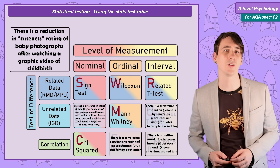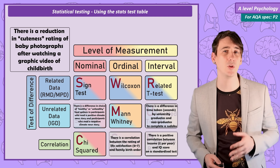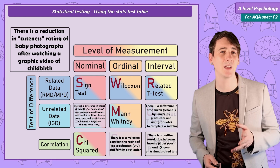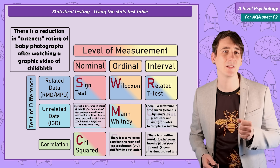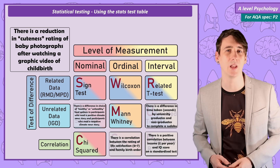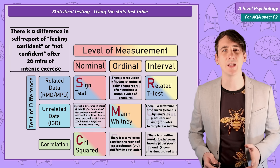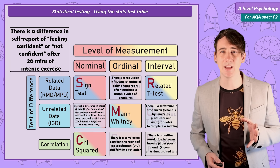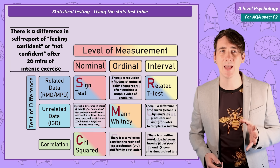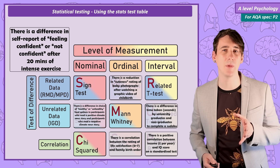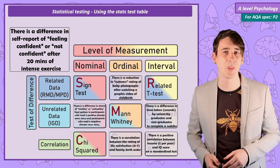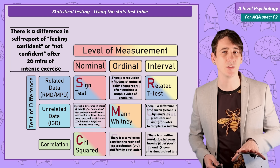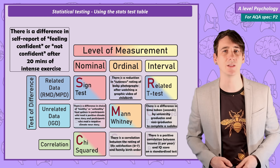Example 5: Wilcoxon. This is a test of difference; it uses repeated measures, so related data, and it's collected at the ordinal level. Example 6: a sign test. A test of difference, again using repeated measures design, so related data. But the data collected is in categories, so nominal data.